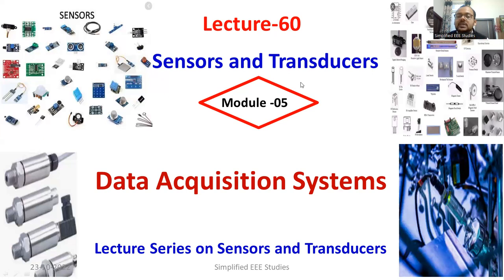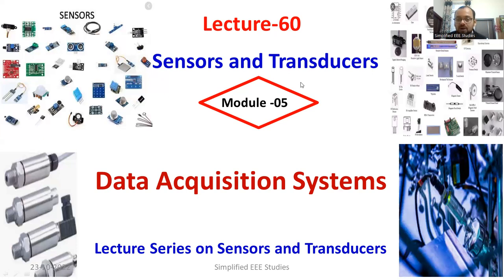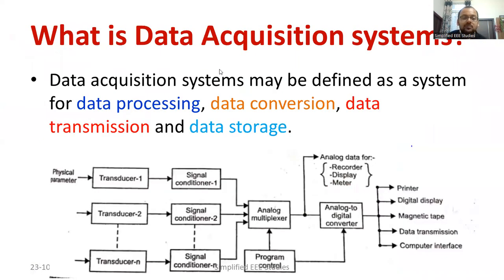First of all, we have sensors or transducers. Number two, we require signal conditioning devices. Number three, we need a data acquisition system. Now we will understand the basics of data acquisition system.